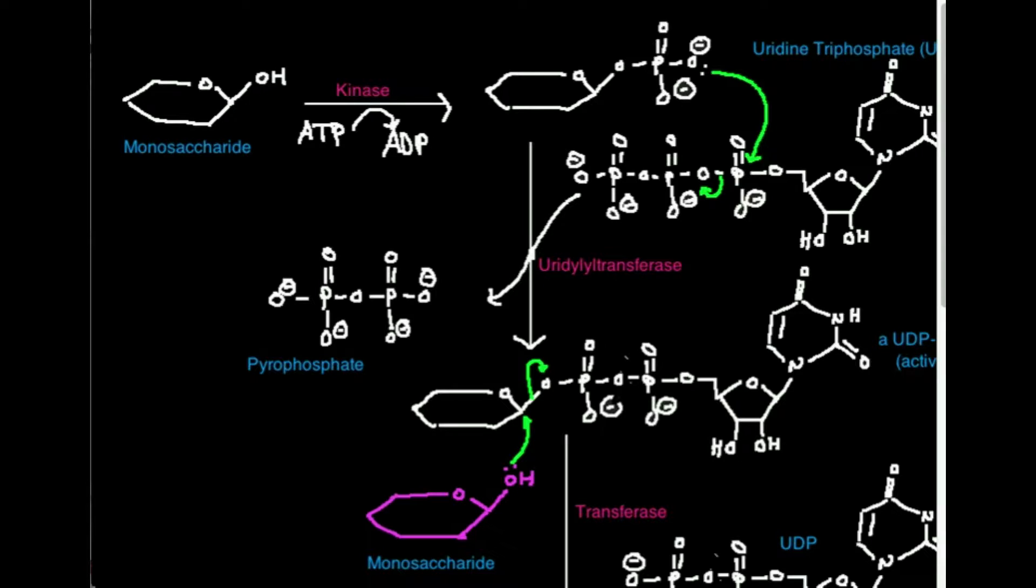So what we're going to do is look at a general strategy that cells use to condense two monosaccharides to make a disaccharide. Now over here on the left side of the screen, I have a generic monosaccharide. And I'm just drawing it right now with one substituent label. That's this OH group.